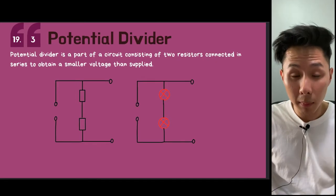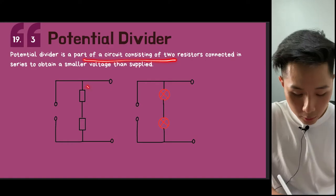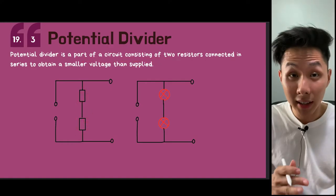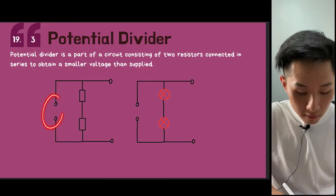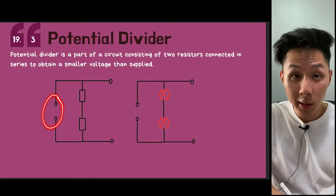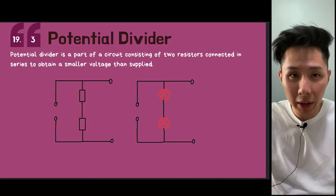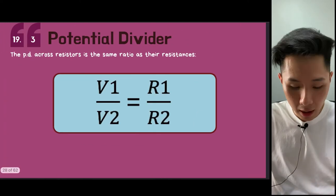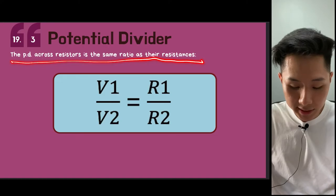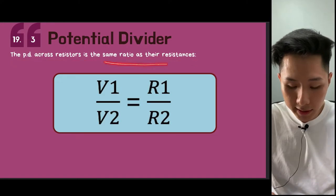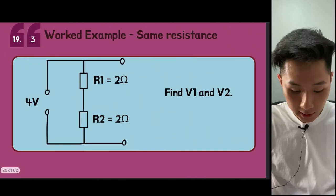The third part of this video covers the potential divider. It is a part of a circuit consisting of two resistors connected in series, used to obtain a smaller voltage than supplied. Even if the source voltage is large, we can use a potential divider to divide the potential difference. The key rule is that the PD across each resistor is in the same ratio as their resistances.